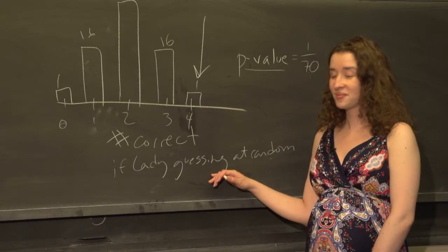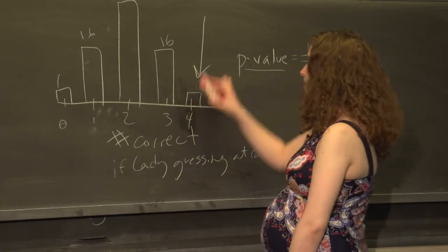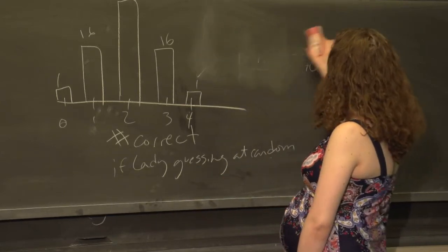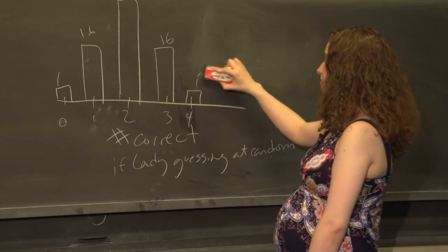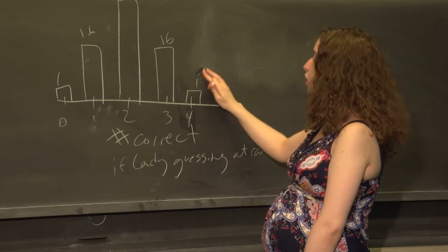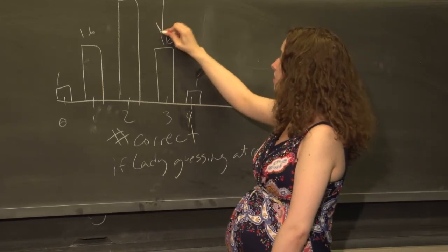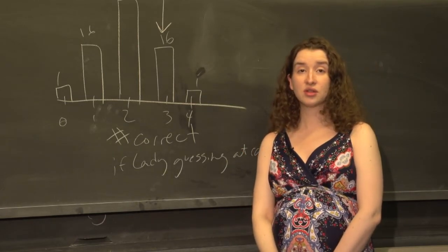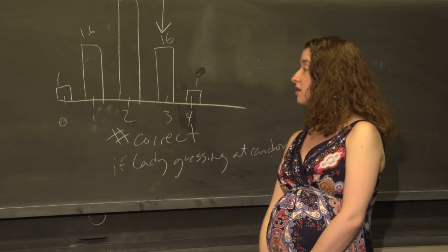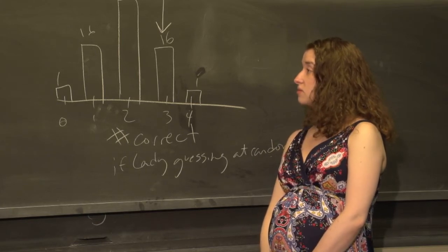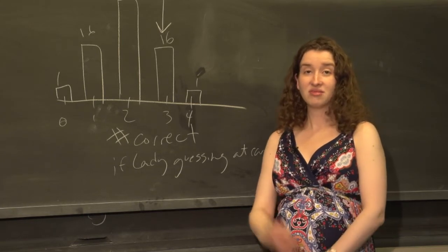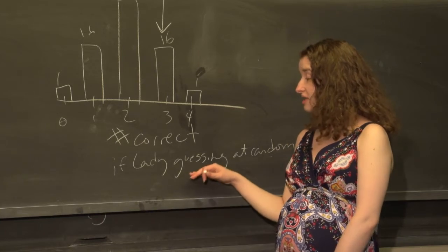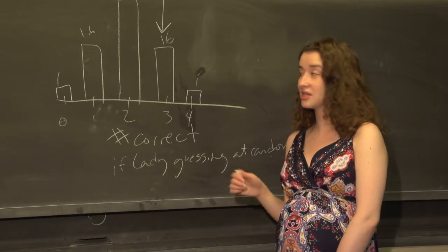Let me change this a little bit. Suppose that the lady picked out four cups and only three of them were correct. Do we think that that data, that evidence contradicts this initial assumption that she's guessing at random?